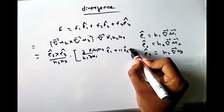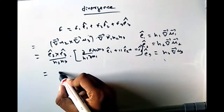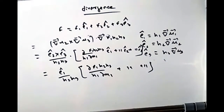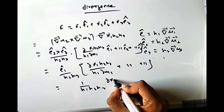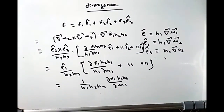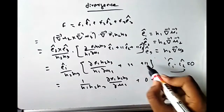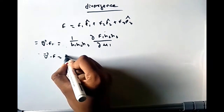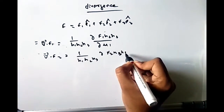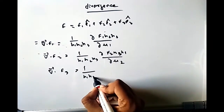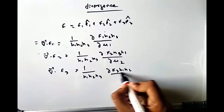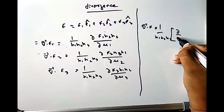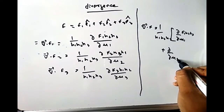Substituting the values of ∇u₂ and ∇u₃, we get (ê₂/h₂) × (ê₃/h₃) · ∇(F₁h₂h₃) = (ê₁/h₂h₃) · ∇(F₁h₂h₃). Taking the gradient, only the ê₁ component survives: (1/h₁h₂h₃) ∂(F₁h₂h₃)/∂u₁. This gives the first term of the divergence. Similarly computing for the other two components gives the full expression.